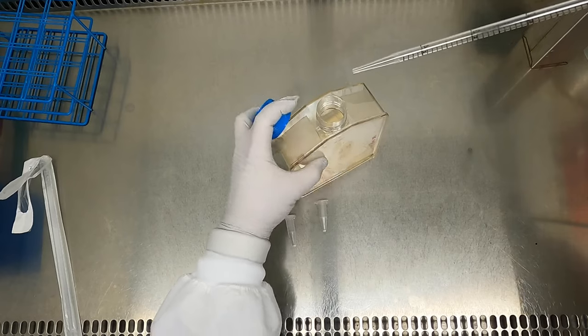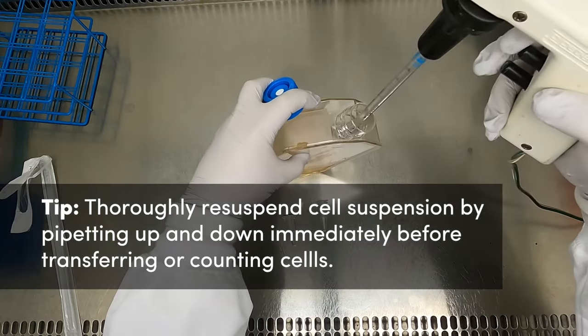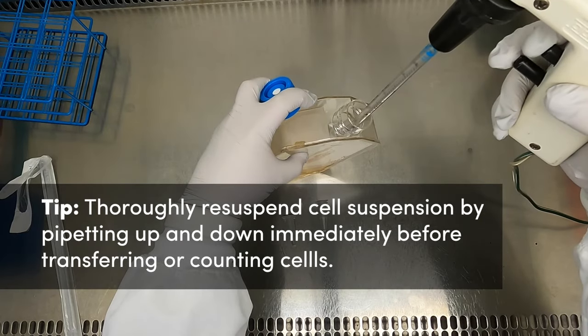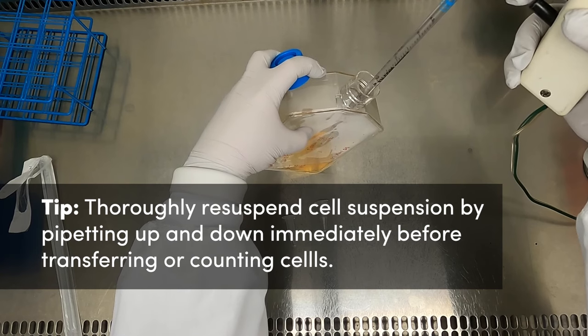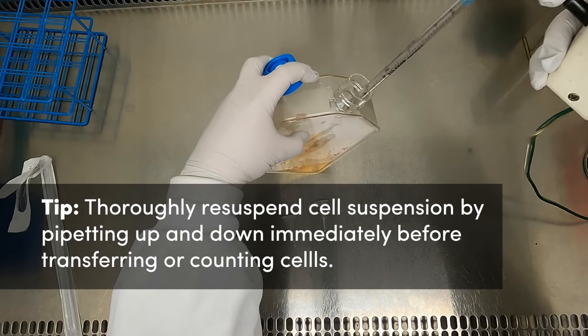Now is a good time to get into our third essential tip. In the absence of shaking, cells and media will start to settle to the bottom due to gravity, even in a short time. Before transferring cells from one vessel to another, pipet the suspension up and down a few times to ensure the cells are thoroughly resuspended and each plate receives a consistent number of cells. This practice will also help the accuracy of your cell counts.